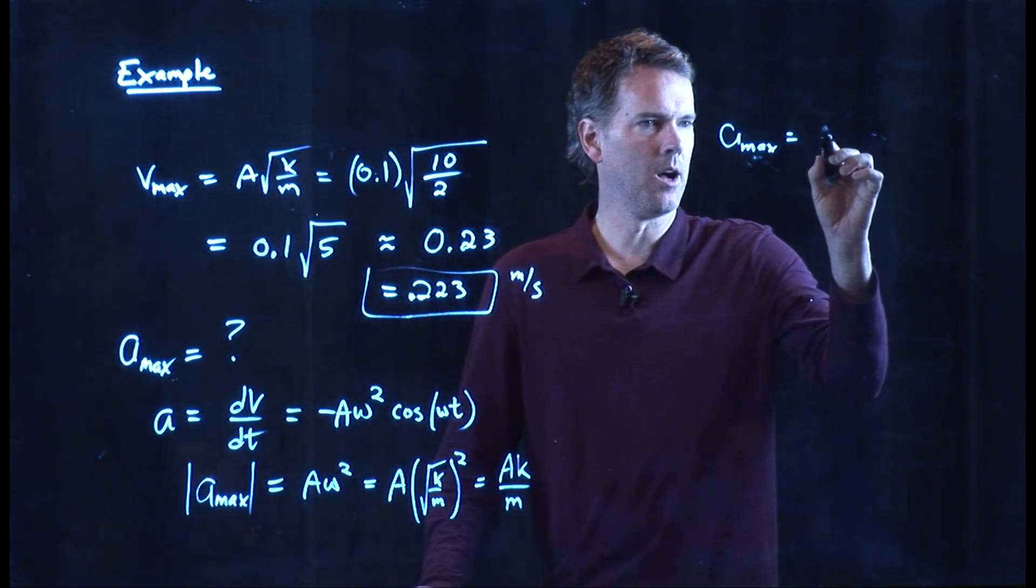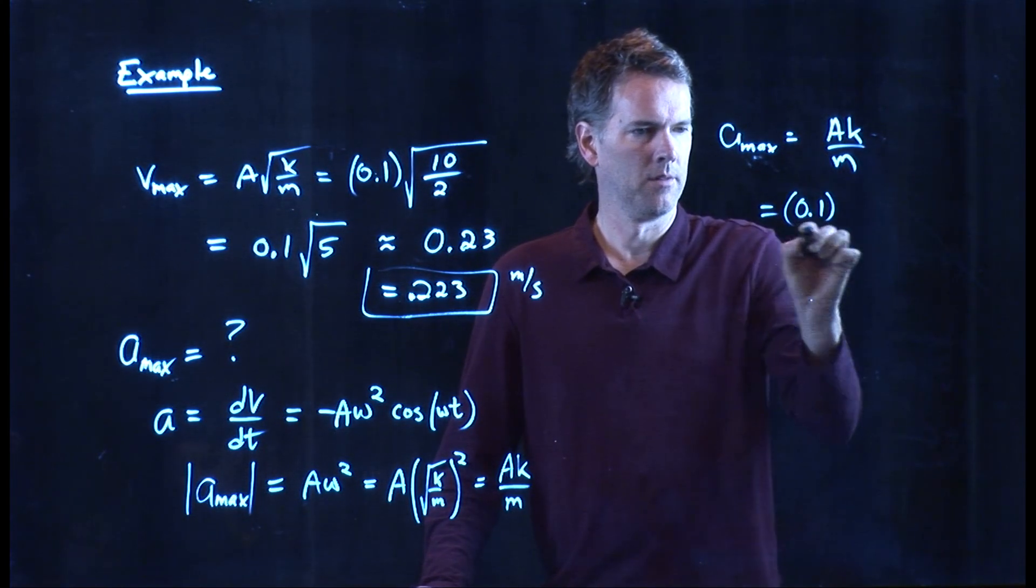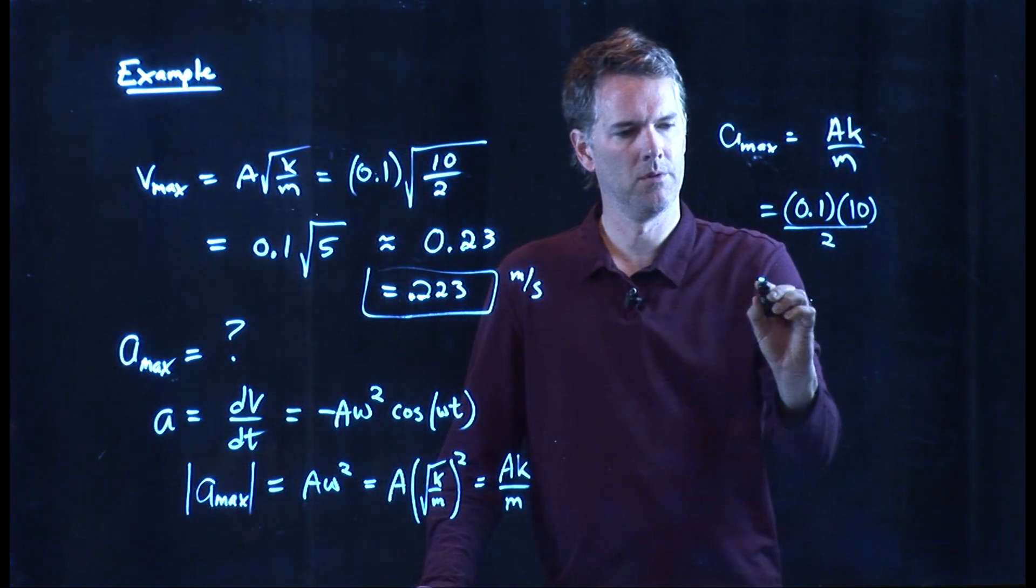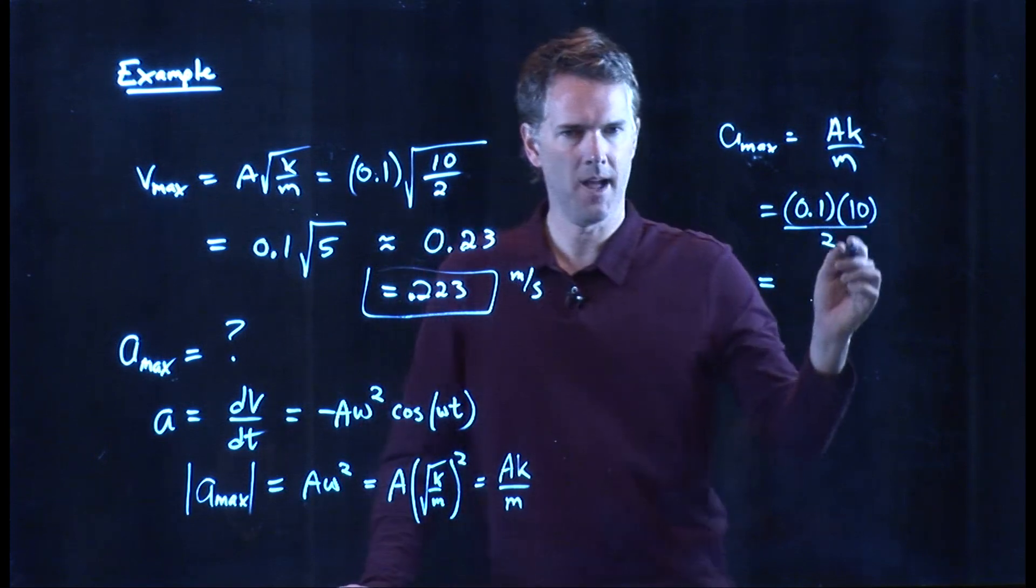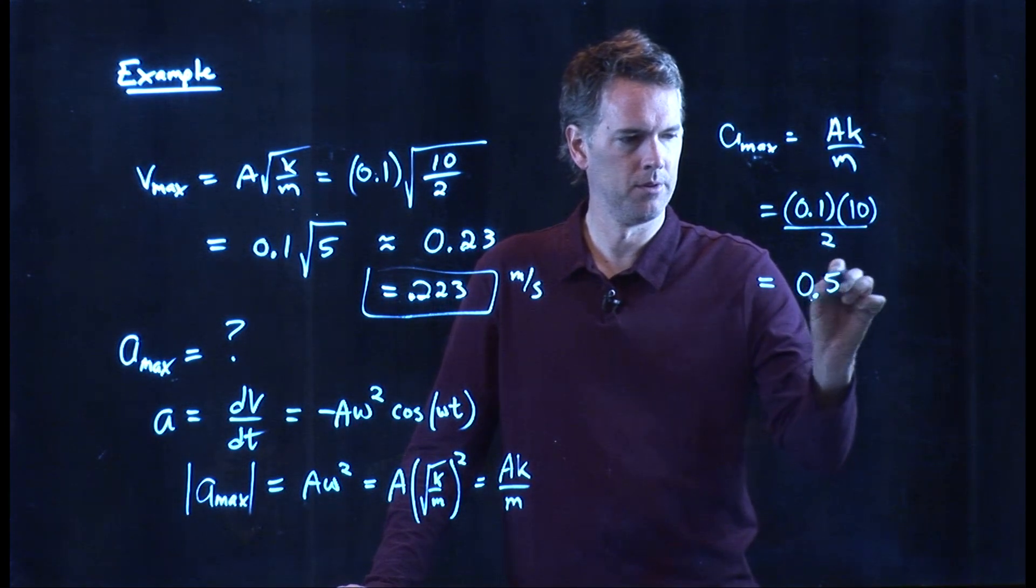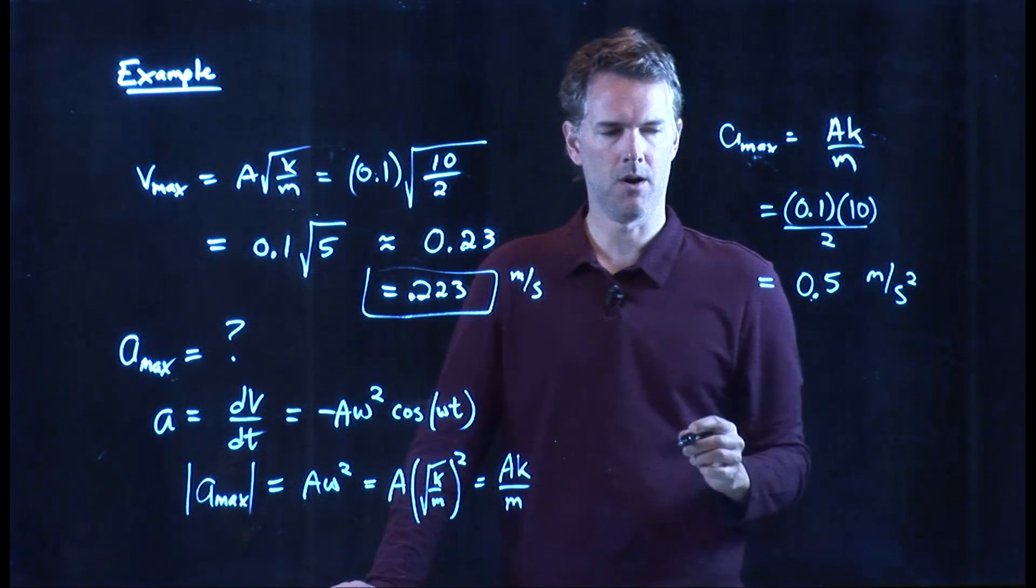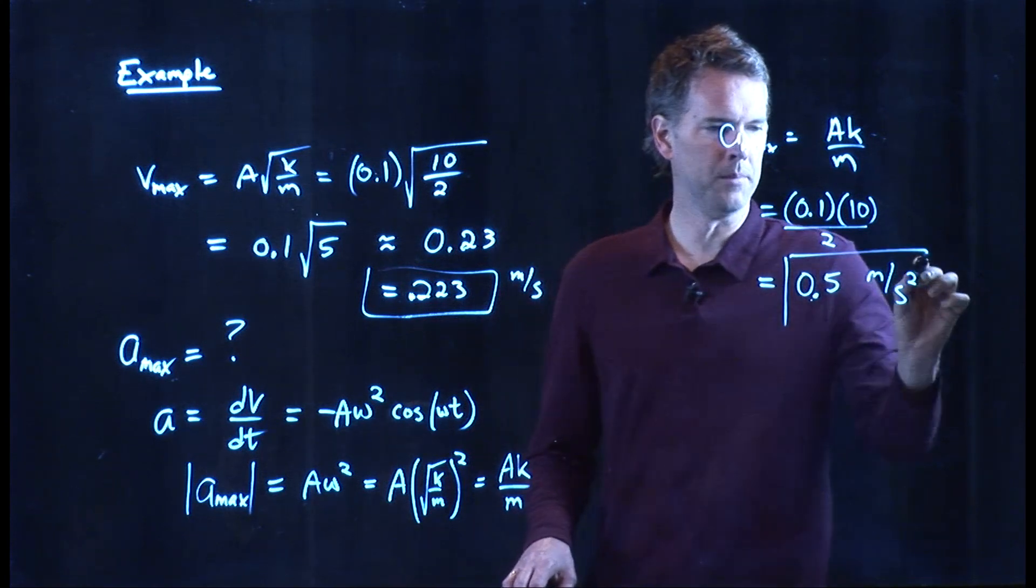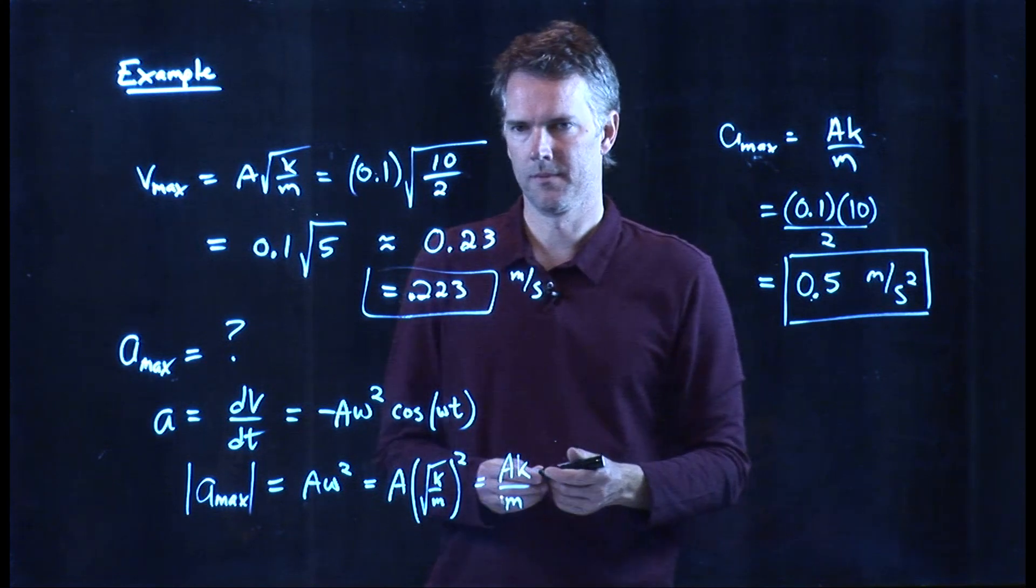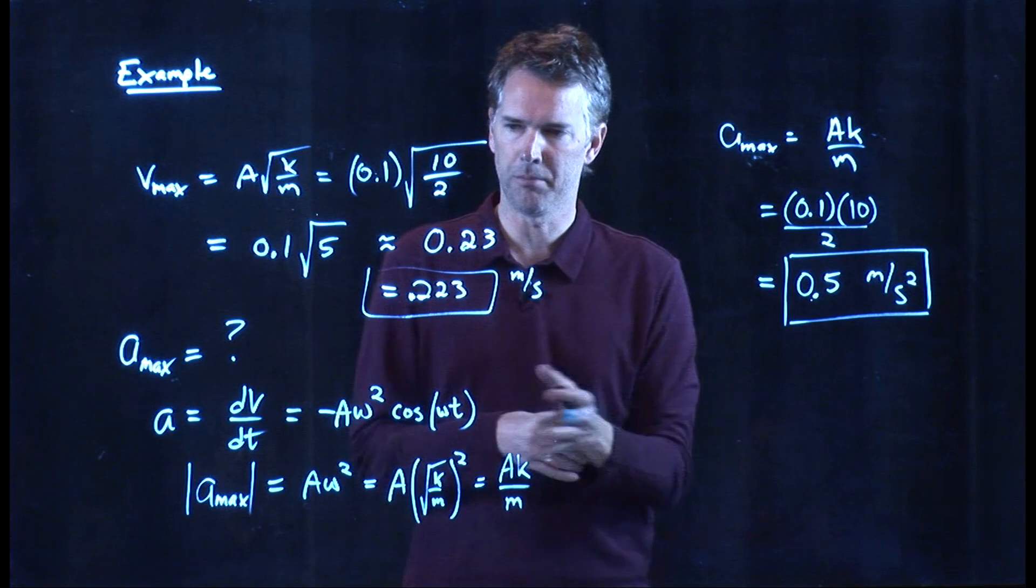A, we said, was 0.1. K, we said, was 10. M was 2. 0.1 times 10 is 1. We get 1 over 2, which is, of course, a half. And the units in SI units are meters per second squared.